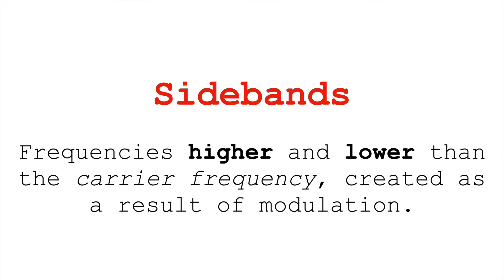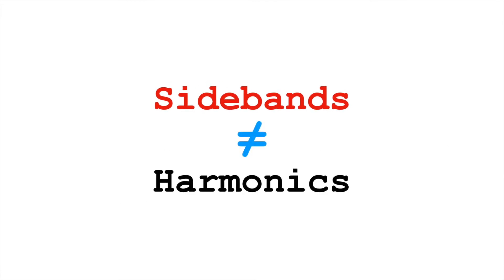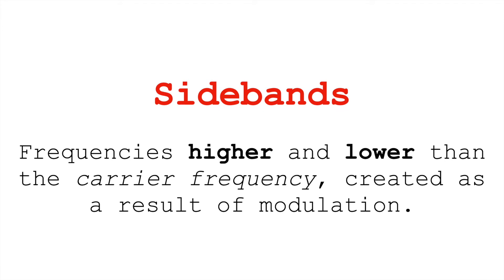It's very important to understand that sidebands are not harmonics. They can sometimes be harmonics, but sidebands are a different phenomenon. Sidebands are aptly named because they appear on either side of the carrier frequency — both above it and below it — unlike harmonics and partials, which are always above a fundamental.